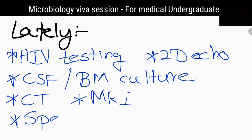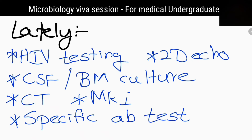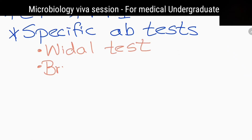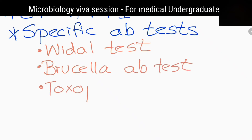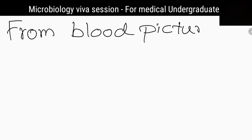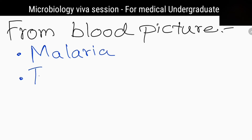If necessary, specific antibody tests. What are those special antibody tests? Widal test, Brucella antibody test, and Toxoplasma antibody test. What are the infections you would expect to identify from a blood picture? Malaria, trypanosomiasis, relapsing fever, and infectious mononucleosis.